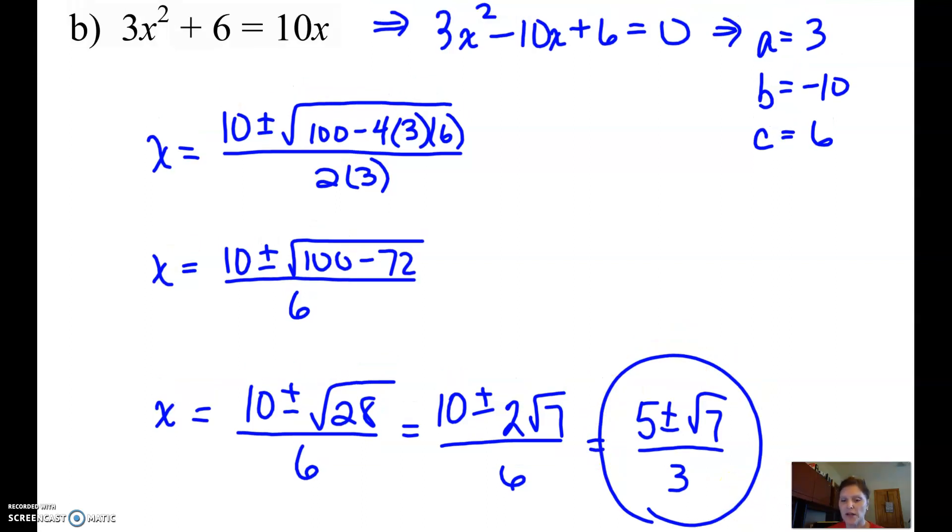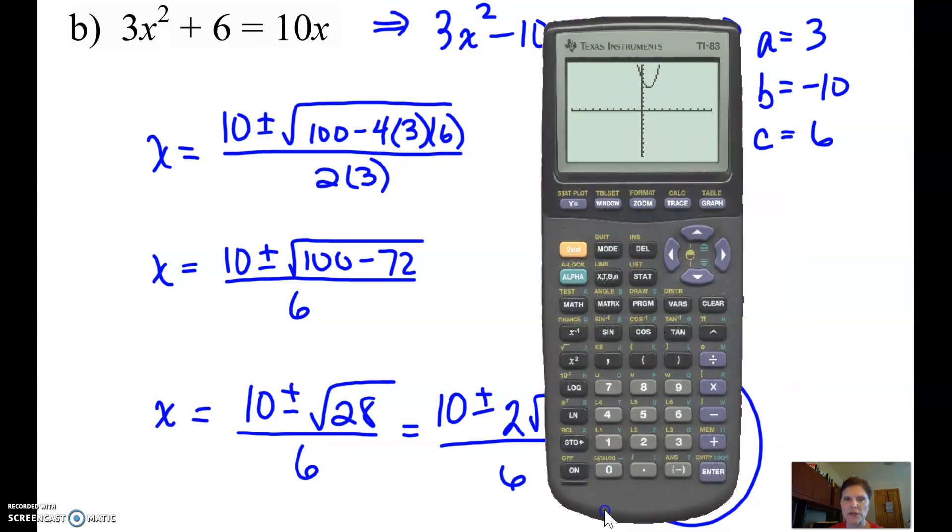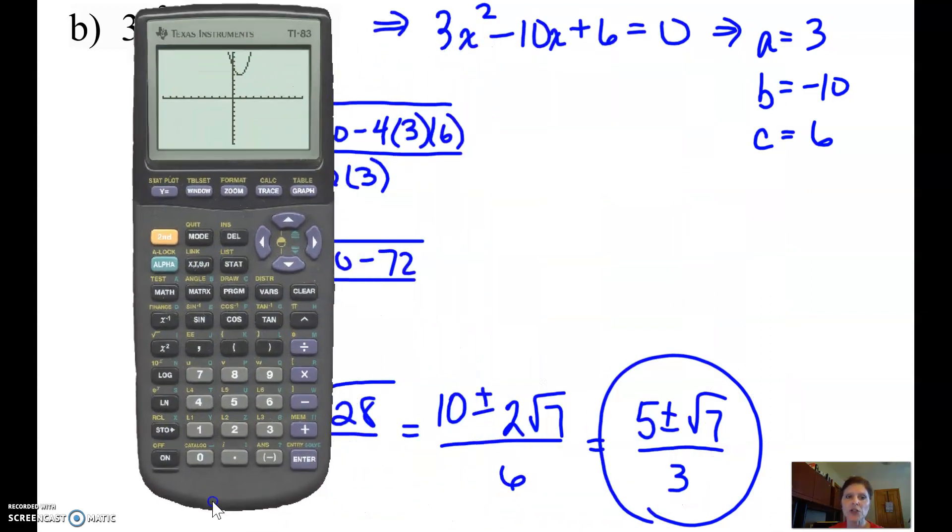Now this one, we can actually check directly on the calculator, so let's see what that looks like. I'm going to always use the equation that's equal to 0, so 3x squared minus 10x plus 6, and I'm going to hit graph.